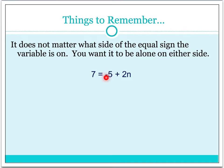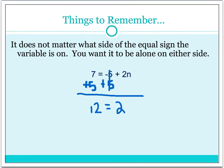We know that we have a negative 5 here, and we also have a 2 in front of the n being multiplied to it. This negative 5 is being subtracted, so we use the opposite of subtraction to get rid of it. Following the rule of getting rid of addition and subtraction first, we add 5 to both sides of the equal sign. A lot of times students want to add the 5 only to the 2n, but you have to work on both sides. Once we do this, we end up with 12 is equal to 2n.